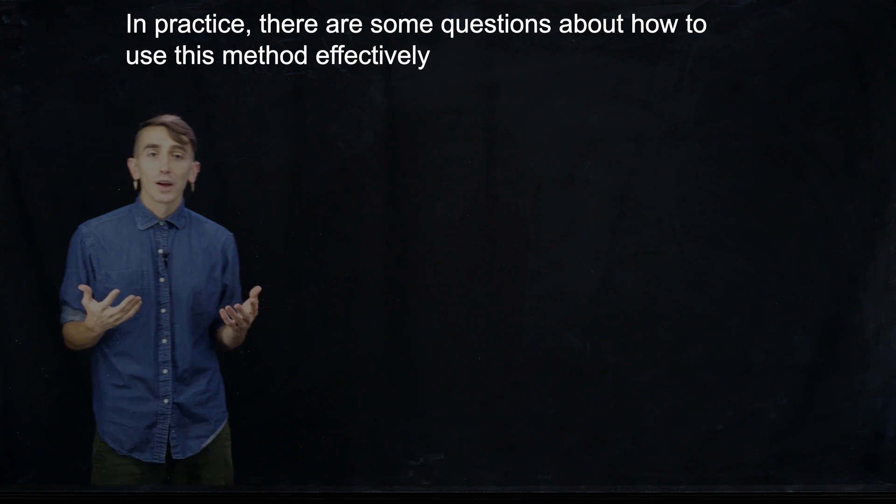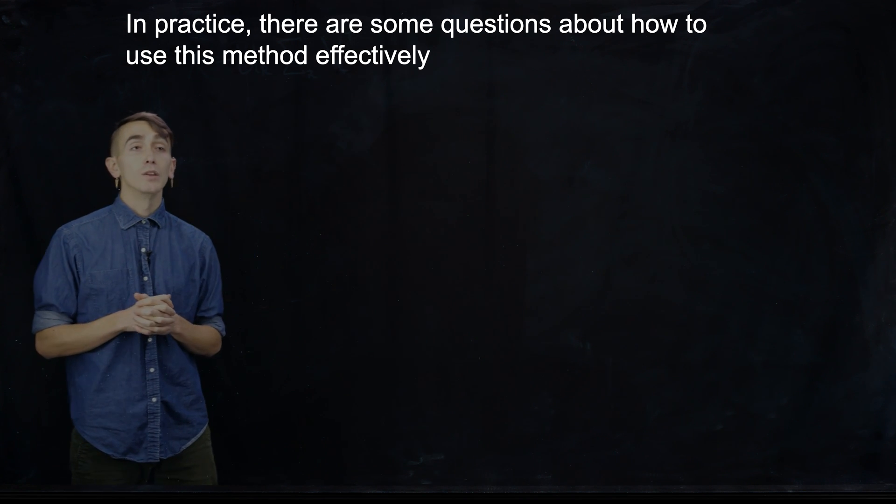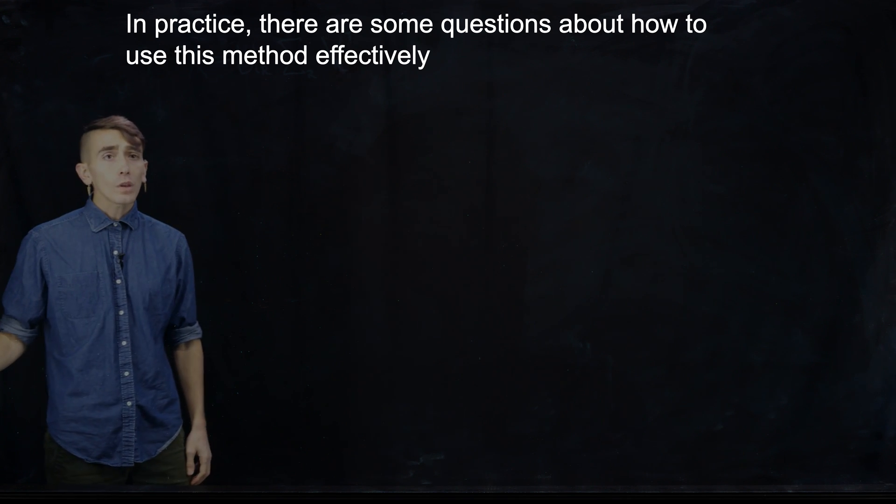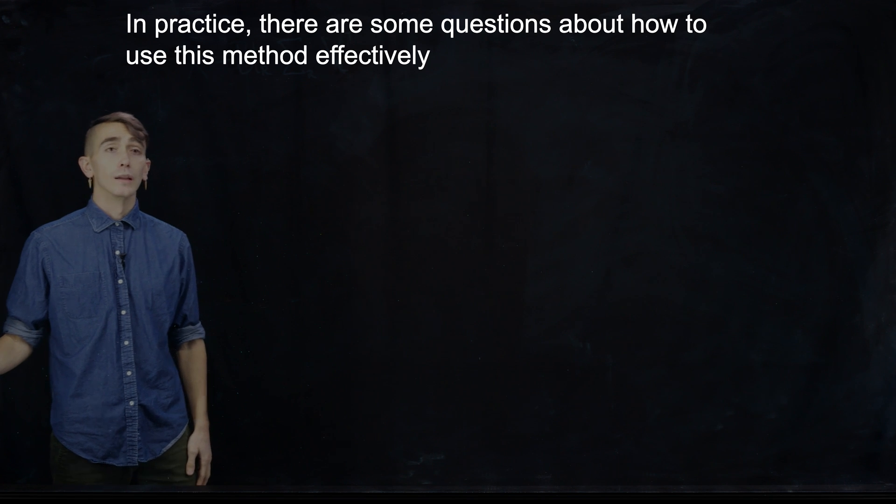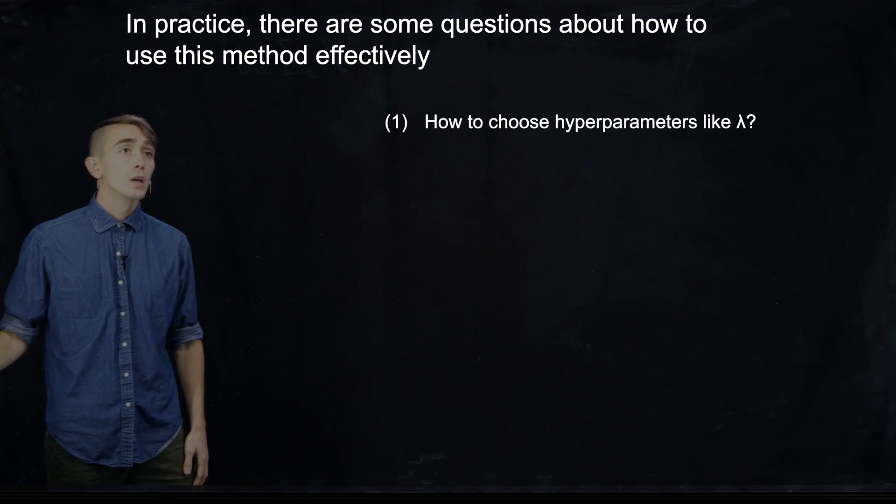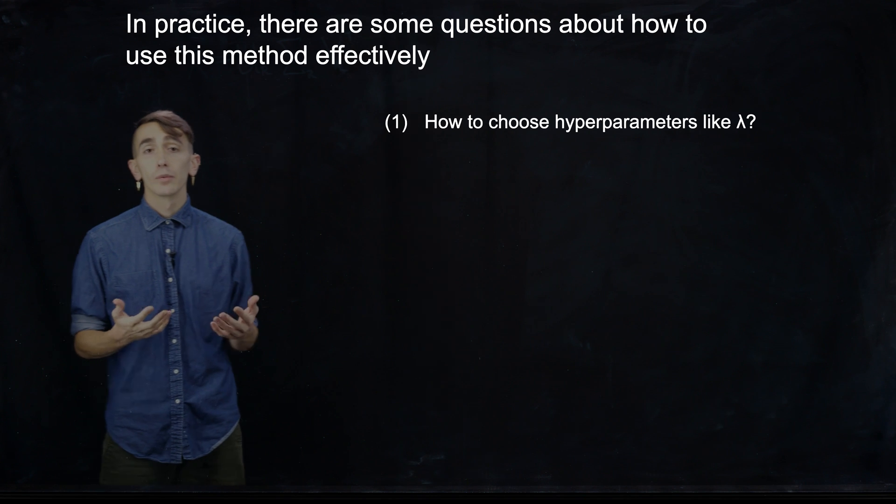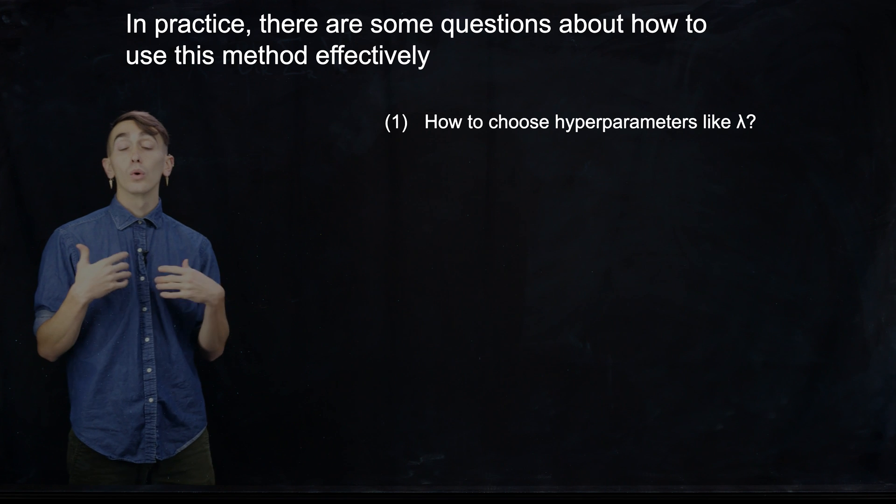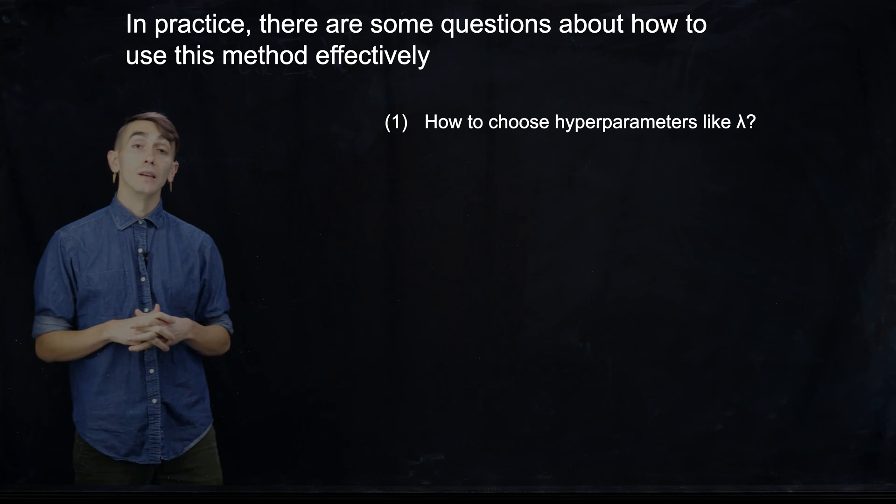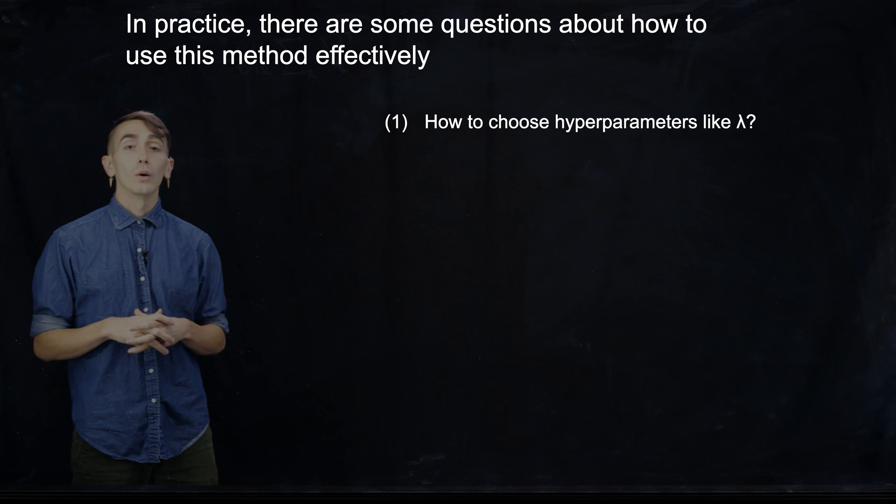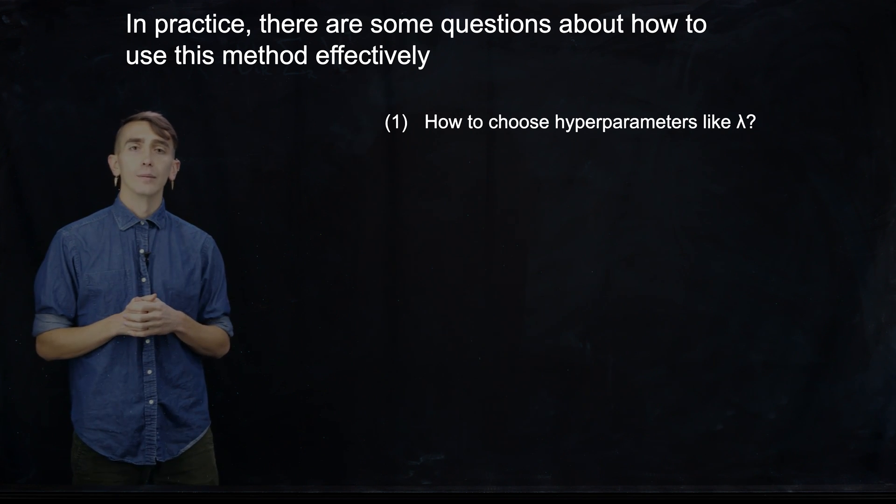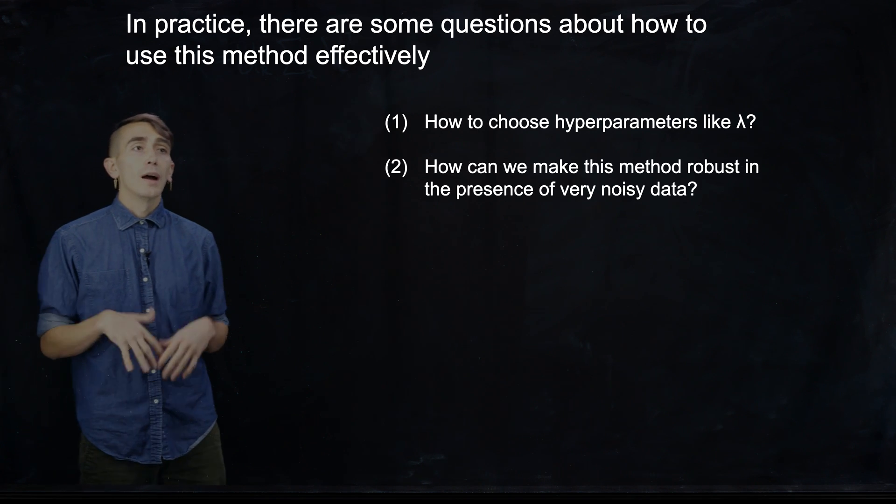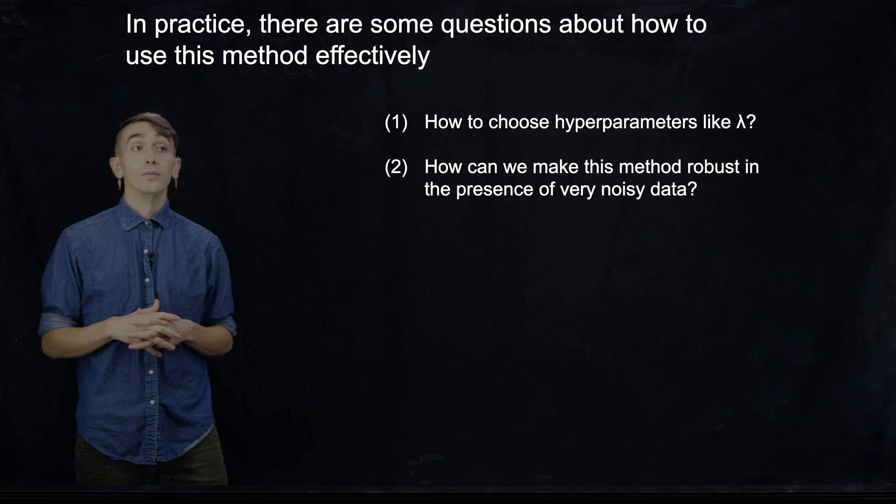So you may have seen the SINDy method many times, and you might still have some questions about how do you actually use this method effectively. So I want to bring up some questions that often come up or that may sort of resonate with you. So how do you actually choose the hyperparameters in these algorithms, like lambda? So lambda was the term controlling how strong the regularizer is in the optimization problem. So how do you actually pick the value of that lambda to get a good model?